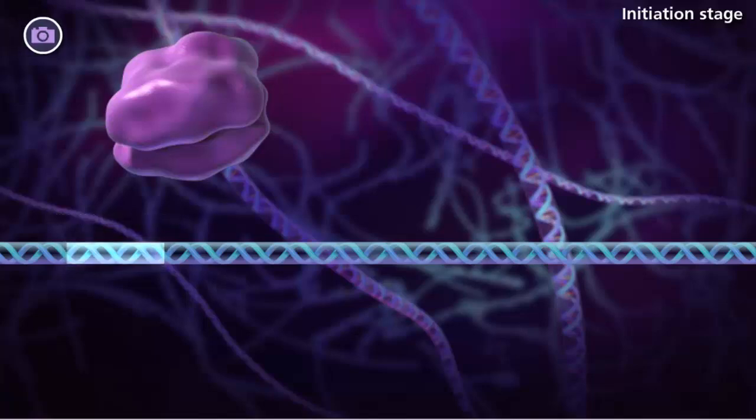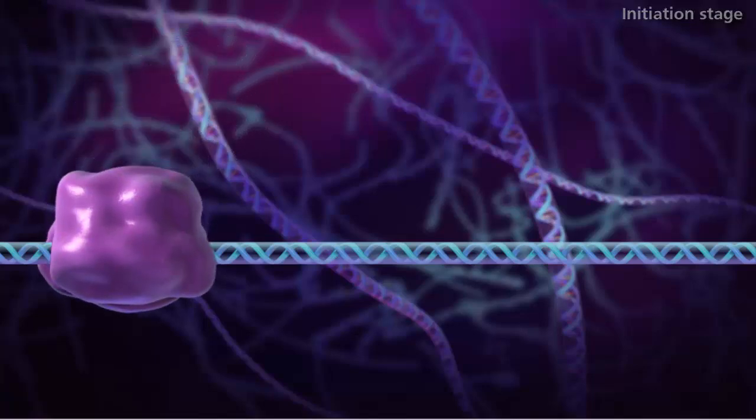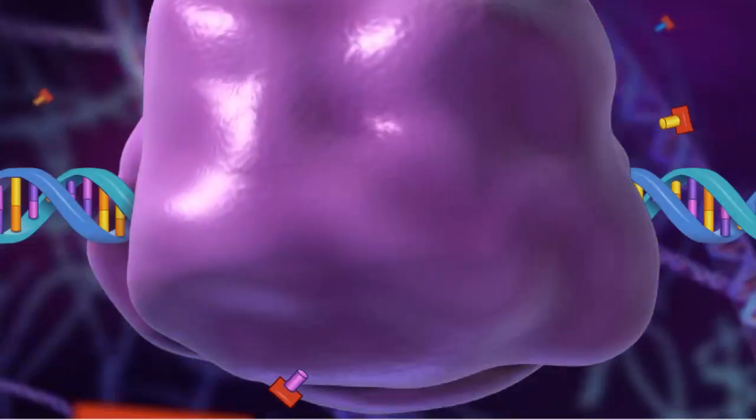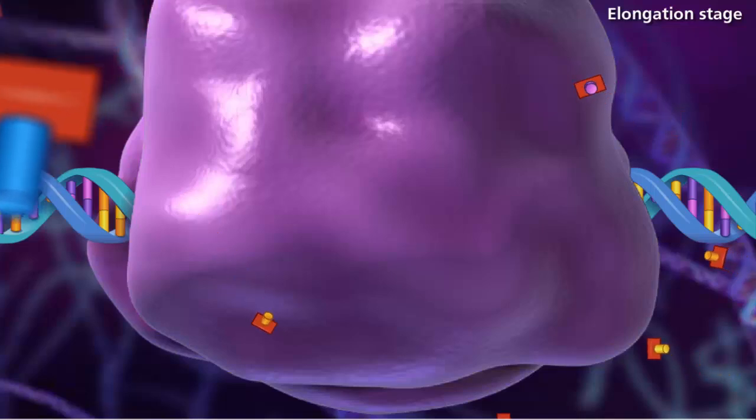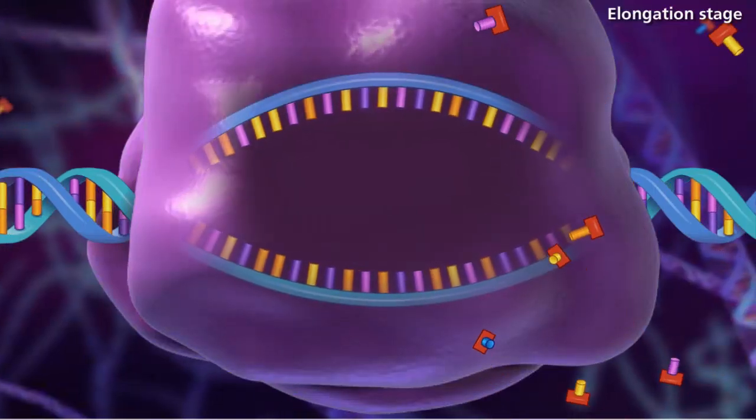This is where the majority of gene expression is controlled by either permitting or blocking access to this site by the RNA polymerase. Binding causes the DNA double helix to unwind and open.